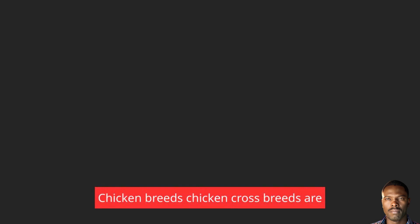Chicken breeds. Chicken crossbreeds are obtained by crossing two pure breeds. Poultry breeds are classified into main types according to the products they provide — for example, layers are kept for eggs, broilers kept for meat, and dual purpose kept for both. There are four categories of chicken breeds.